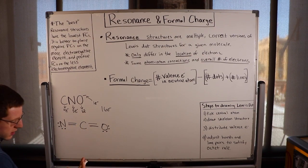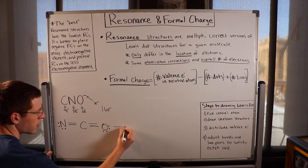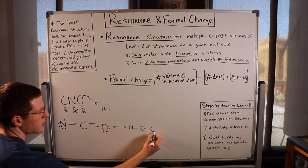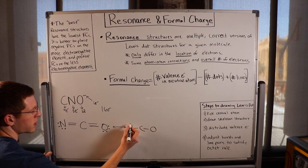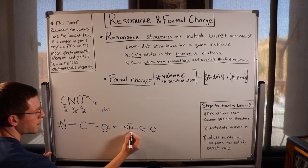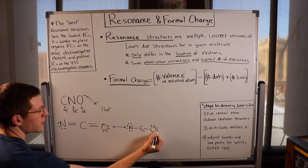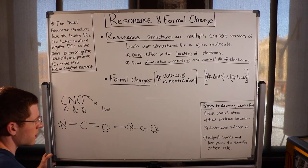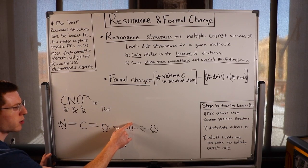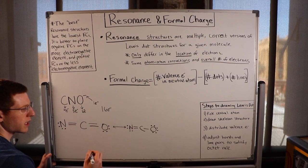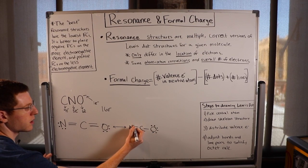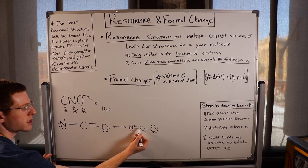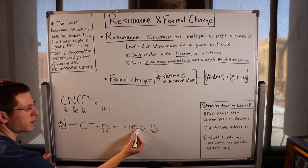We could have drawn this a different way. Starting with the same skeleton and distributed electrons on the outer atoms, carbon again needs more electrons. But this time, instead of taking one lone pair from oxygen, we take two lone pairs from nitrogen to make the nitrogen-carbon bond a triple bond. Nitrogen still has a satisfied octet, and carbon still has a satisfied octet.